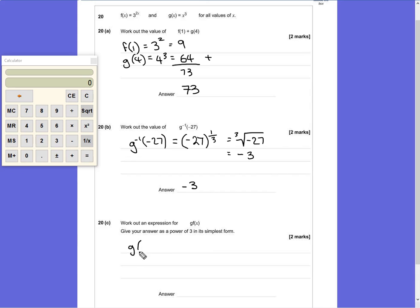This can also sometimes be written as gf(x). Now g tells us that we're going to take whatever's passed into it and raise it to the power of 3.